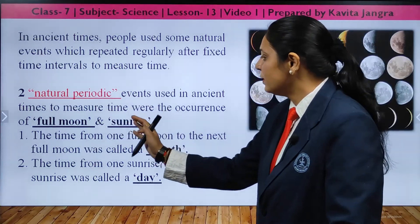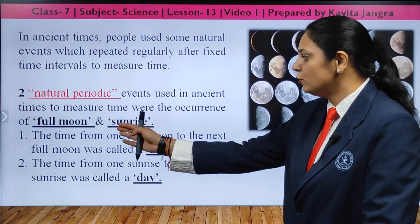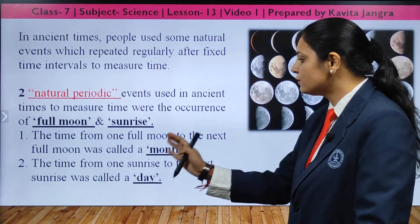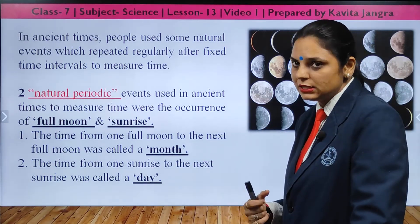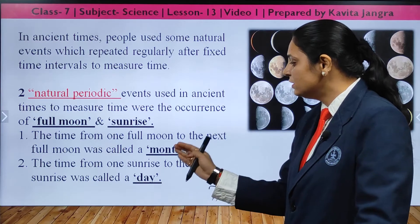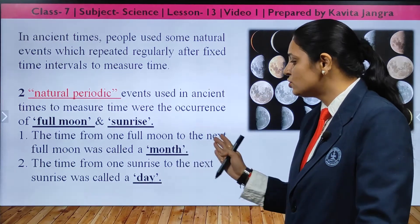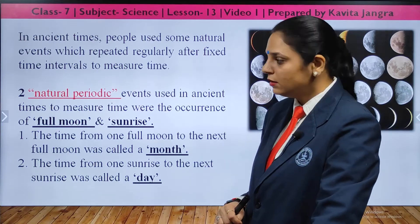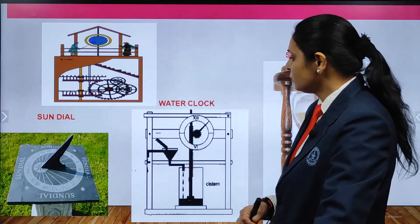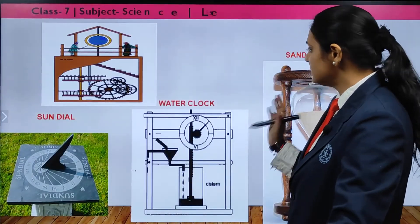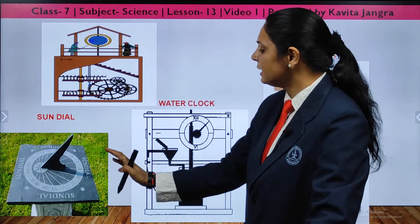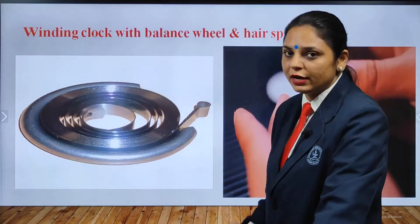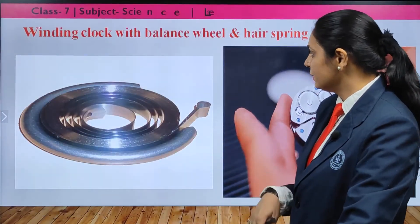Natural periodic events were used to measure time: from one full moon to the next full moon tells us one month; from one sunrise to the next sunrise tells us one day. Sand clocks, water clocks, and sundials were all used to calculate roughly one hour durations.